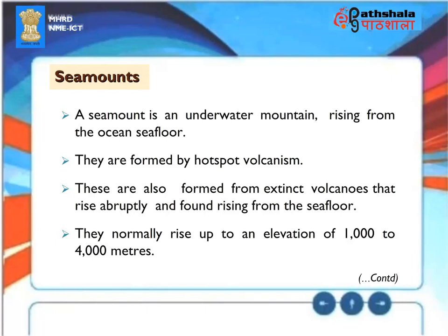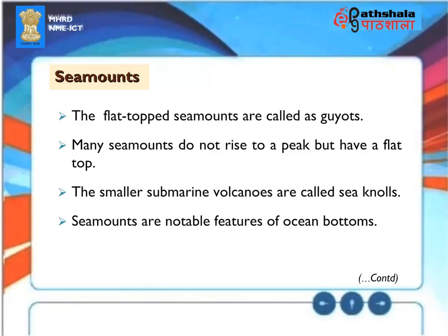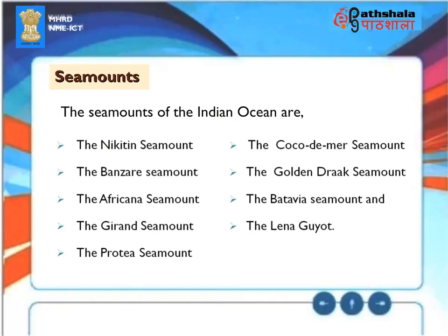Sea Mounts. A sea mount is an underwater mountain rising from the ocean sea floor. They are formed by hotspot volcanism and also from extinct volcanoes that rise abruptly from the seafloor. They normally rise up to an elevation of 1,000 to 4,000 meters. The flat-topped sea mounts are called Guyots. Many sea mounts do not rise to a peak but have a flat top. The smaller submarine volcanoes are called sea knolls. The sea mounts of the Indian Ocean are the Nikitin sea mount, the Banzare sea mount, the Africana sea mount, the Girand sea mount, the Protea sea mount, the Cocody Mare sea mount, the Golden Rock sea mount, the Batavia sea mount, and the Lena guyot.